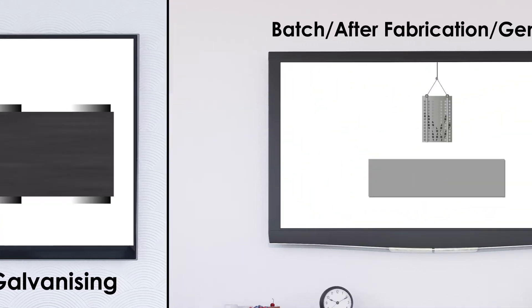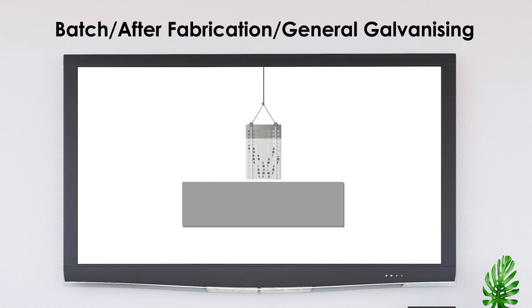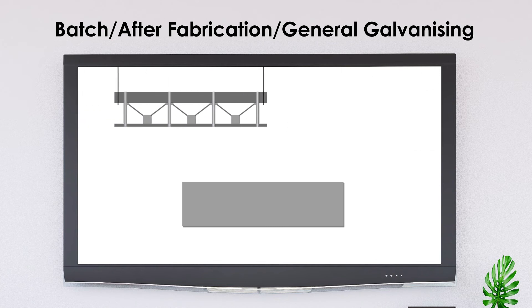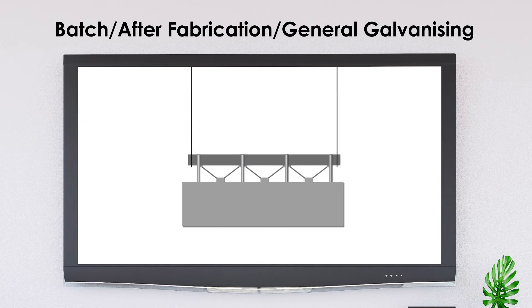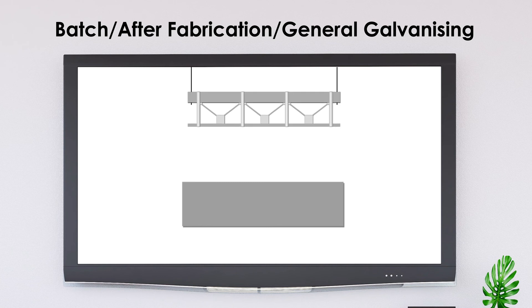The other process involves the application of zinc coating onto the surface of steel parts after they have been fabricated. It is not continuous, as the parts are immersed as a discrete batch into the zinc bath. Parts as small as fasteners to as large as bridge structural girders are galvanized by the batch process method.